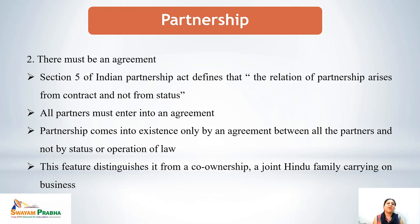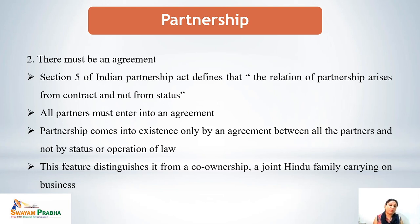The second essential feature is there must be an agreement. Section 5 of the Indian Partnership Act defines that the relation of partnership arises from contract and not from status. There should be an express or implied contract between the partners. If any partnership comes into existence without an agreement, it would not be considered a partnership business. This distinguishes partnership from co-ownership and joint Hindu family business, where the business comes by status or operation of law, not by agreement.